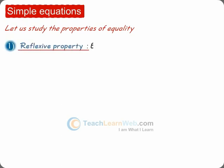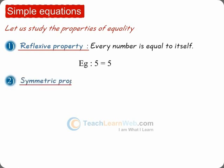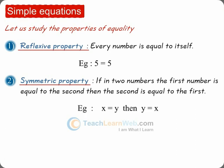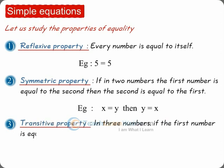Reflexive property: every number is equal to itself. Example: 5 equals 5. Symmetric property: if in two numbers the first number is equal to the second, then the second is equal to the first. Example: if x is equal to y, then y is equal to x.